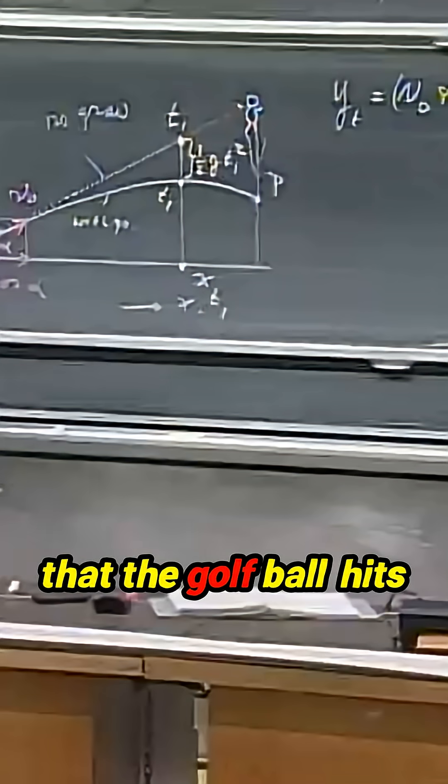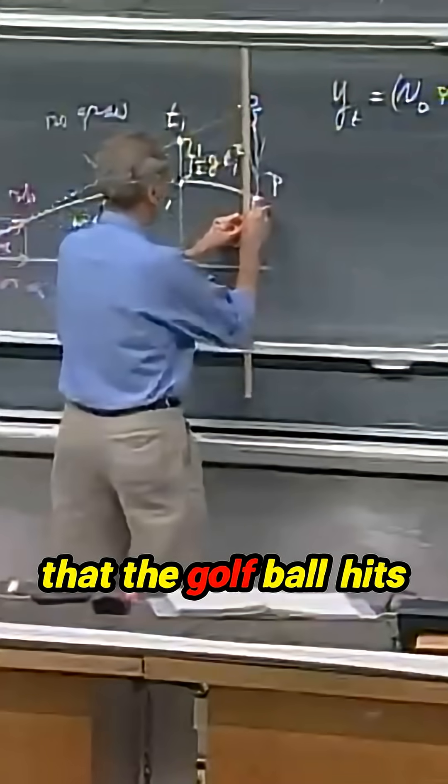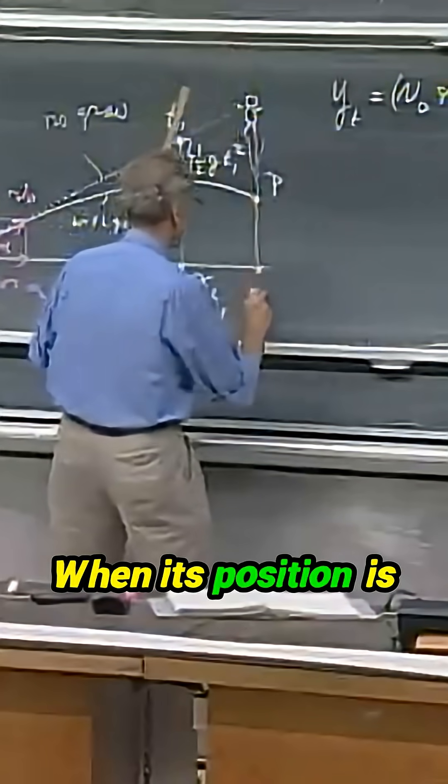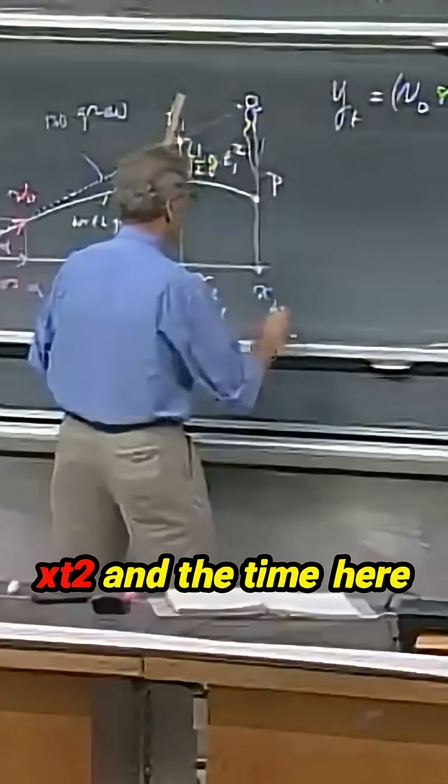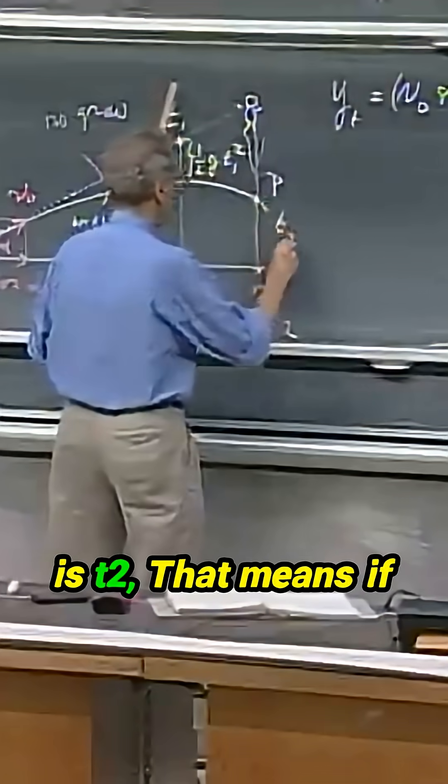Now comes the time that the golf ball hits point P. When its position is xt2 and the time here is t2,